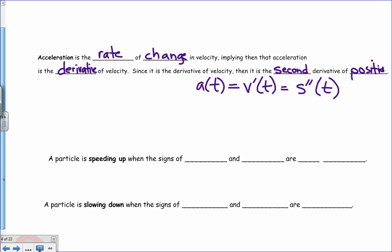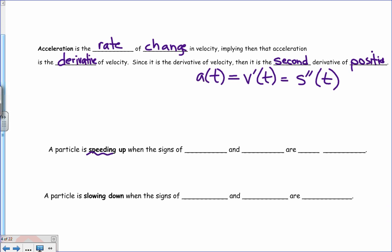One thing that can be confusing is if we use the phrase speeding up. If we say, when is the particle speeding up? Well, in order for it to be speeding up, the velocity and the acceleration must have the same signs.